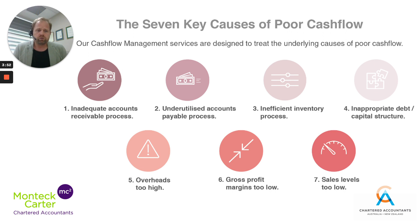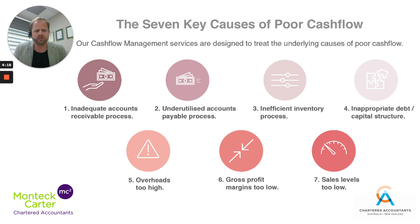Number four is an inappropriate debt or capital structure. It can go both ways — a business might have too much debt, in which case interest and principal payments are hindering your ability to grow; or it could be the other side where you've got too much equity tied up in the business and you need to utilize debt to free up some of that cash.